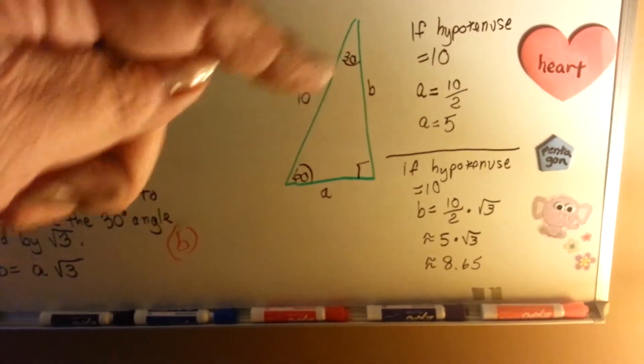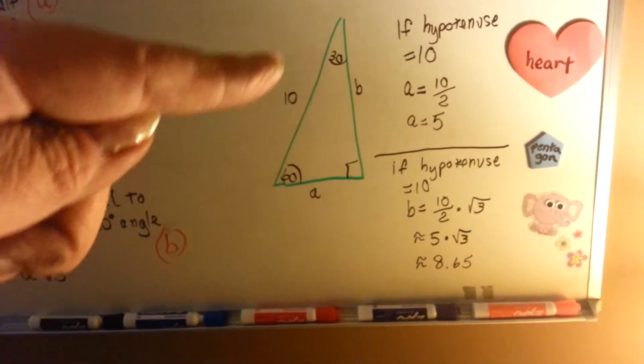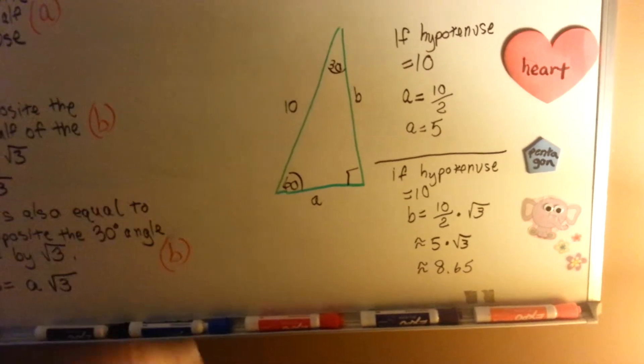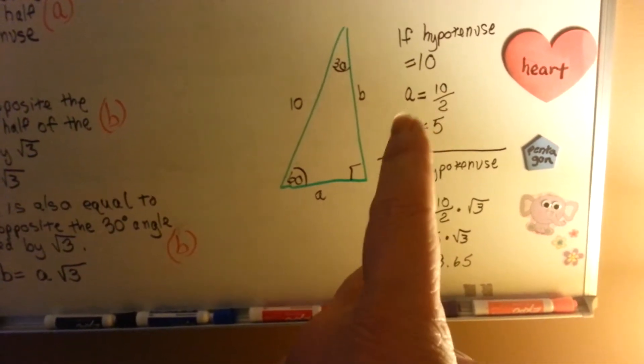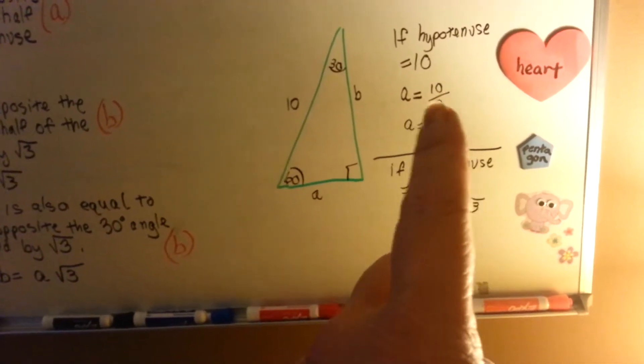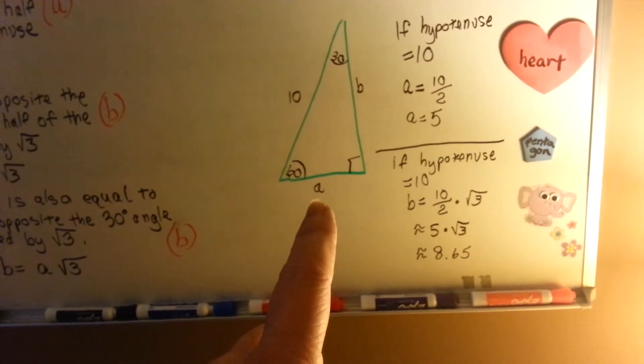Let's say this is our 30, 60, 90 degree triangle, and our hypotenuse is 10. Well, if the hypotenuse is 10, A is equal to the hypotenuse divided by 2, which means A is equal to 5.